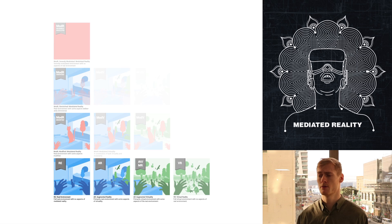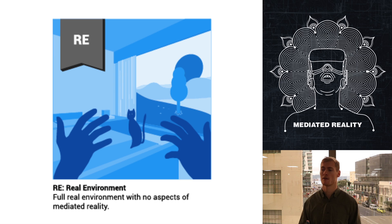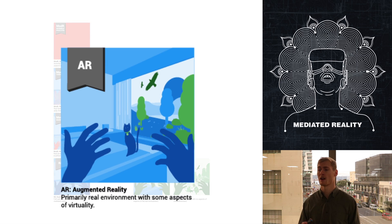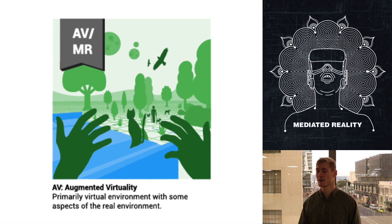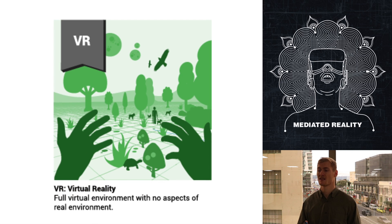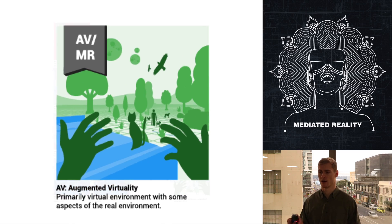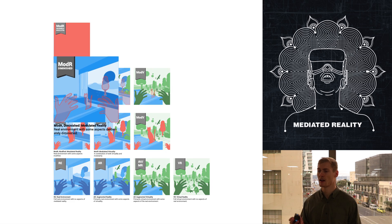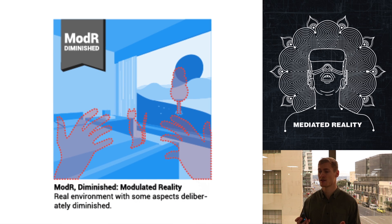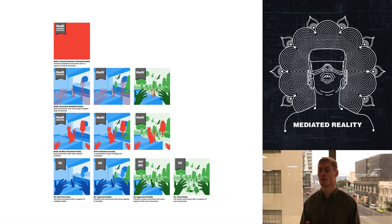To finish this video, I will quickly provide a visual representation of each reality in the mediated reality framework. Starting at the bottom left and covering the virtuality axis is the full real environment with no aspects of either virtuality or modularity. Then there is augmented reality, which is primarily the real environment with some aspects of virtuality. Next is augmented virtuality, which is primarily the virtual environment with some aspects of the real environment. Last on the virtuality axis is virtual reality, which is the full virtual environment with no aspects of the real environment. Mixed reality denotes both augmented reality, augmented virtuality, or any combination of these. First on the modularity axis is modified reality, which is primarily the real environment with some aspects modified. Next comes diminished reality, which is primarily the real environment with some aspects deliberately diminished. Lastly on the modularity axis is severely modulated reality, which is a severely modulated environment with no aspects of the real environment. Modulated reality denotes modified reality, diminished reality, or any combination of these.